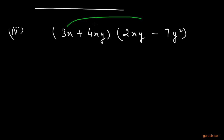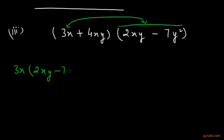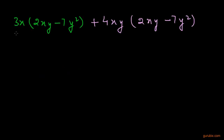First we shall multiply 3x with the bracket: 3x multiplied by (2xy minus 7y²). Now we shall also multiply 4xy with the same bracket. We multiply 3x with 2xy, then write the negative sign and multiply 3x with 7y².